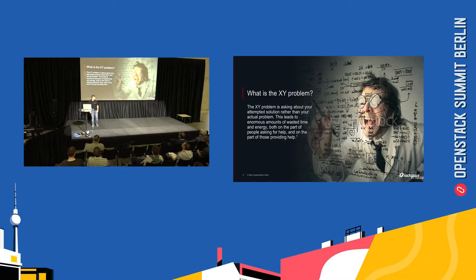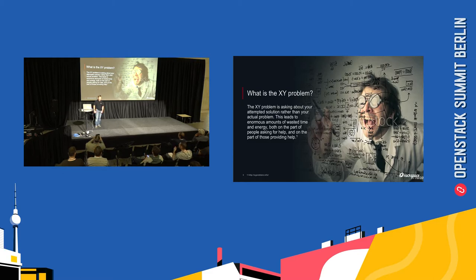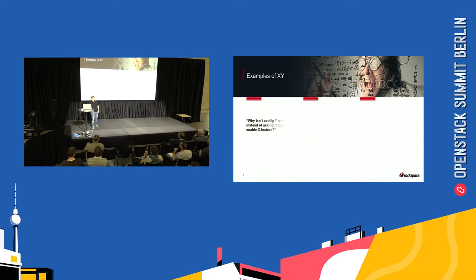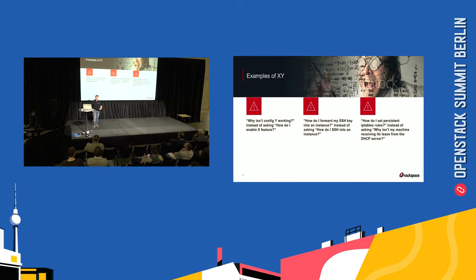So, just a basic definition: what is the XY problem? The XY problem is asking about your attempted solution rather than your actual problem. This leads to enormous amounts of wasted time and energy, both on the part of people asking for help and on the part of those providing help. This talk is actually about a variation of that: the user wants to solve a business problem X, they present you with solution Y, you spend time and energy researching Y, get it implemented, only to discover the business was trying to solve for X. A simple example: somebody asking 'Why isn't config Y working?' instead of asking 'How do I enable X feature?'